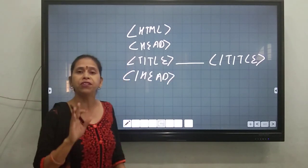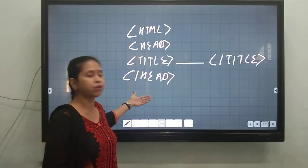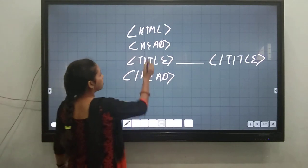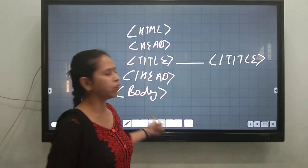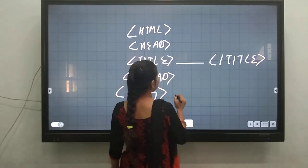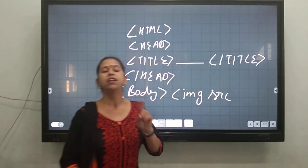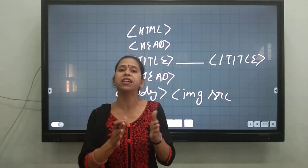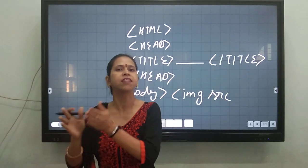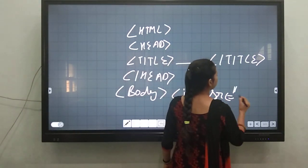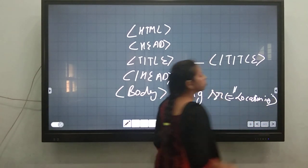If you write the same, definitely your image will come. Please write exactly whatever I am writing. Then the body section — you know the body is the main part of STML. The body will open and afterwards you will write the image inserting tag: img src. That should be written with a space: img space src. Then equals to, and you give the location of the particular image, and then close the tag.